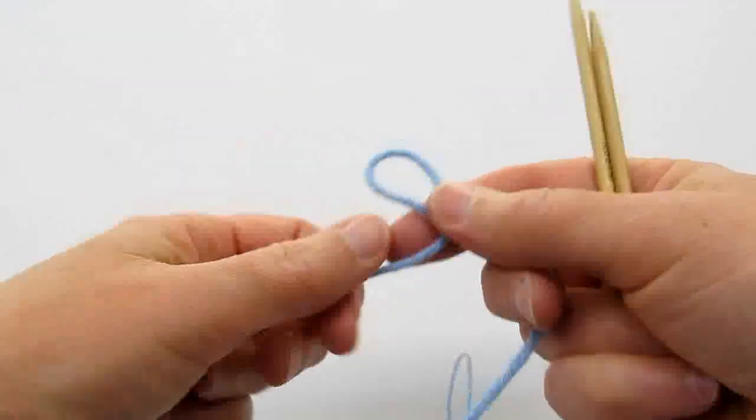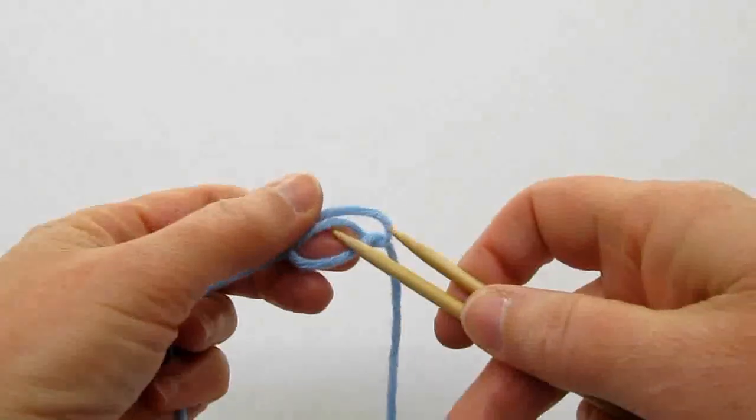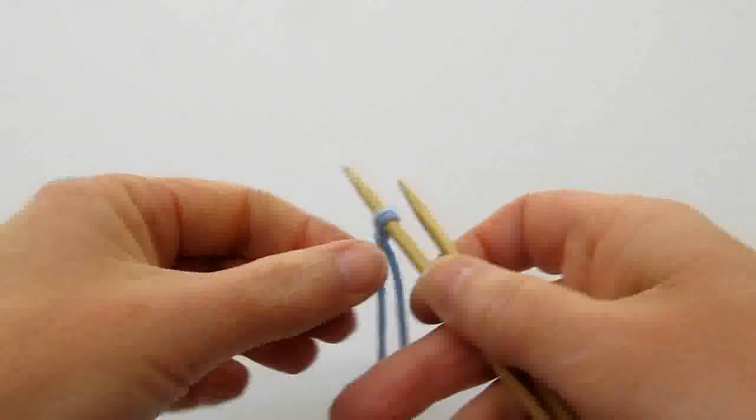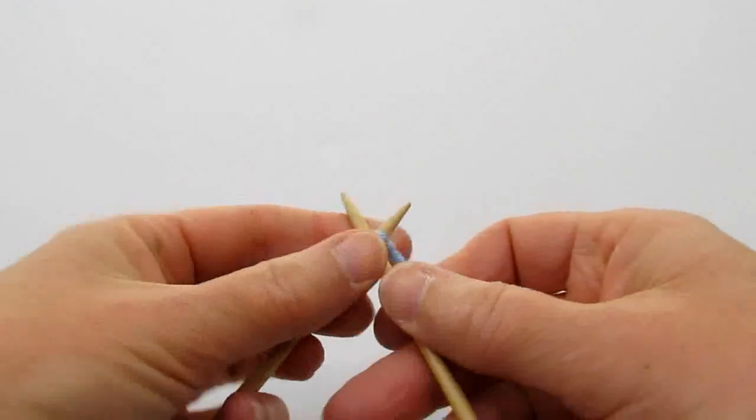A cable cast on begins with a slip knot. Your first stitch is a knitted cast on.